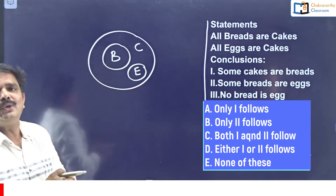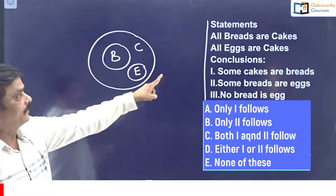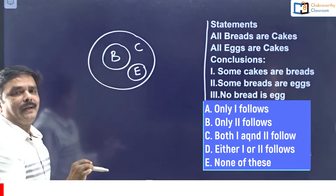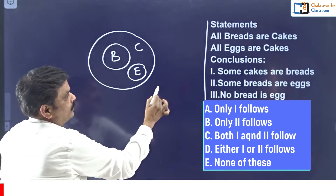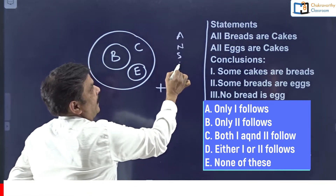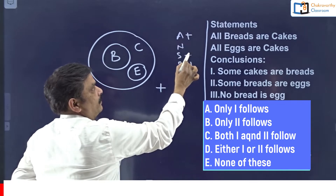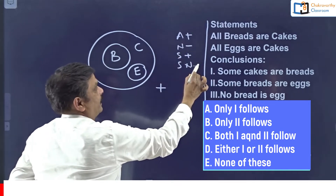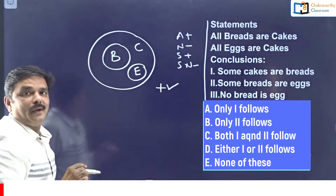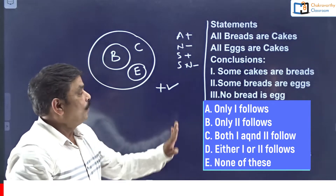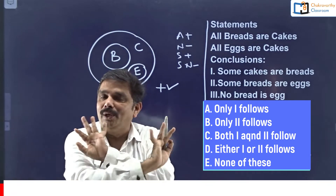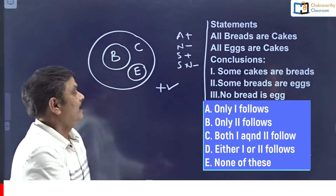The conclusion 'some cakes are reds' is absolutely right. Some means positive conclusion. We have only four types: all, no, some, and some-not. All is positive, some is positive, no is negative, some-not is negative. Once one positive conclusion is right in the basic diagram, it is always going to be right - you need not check it again. That is the final rule.